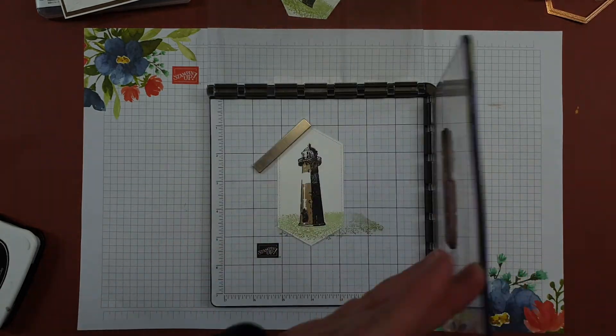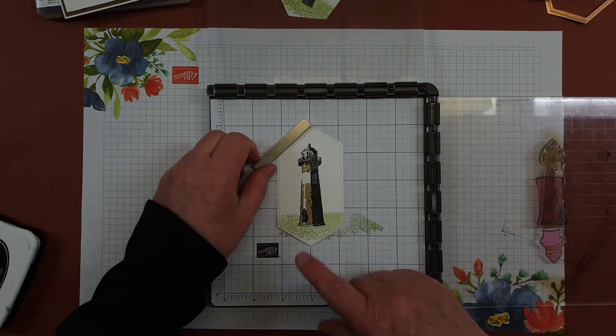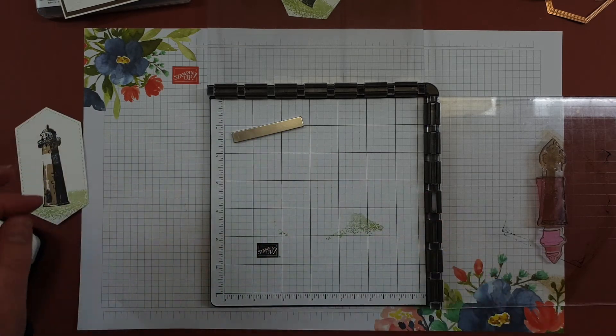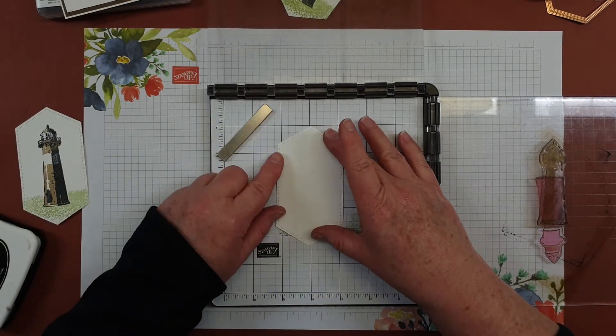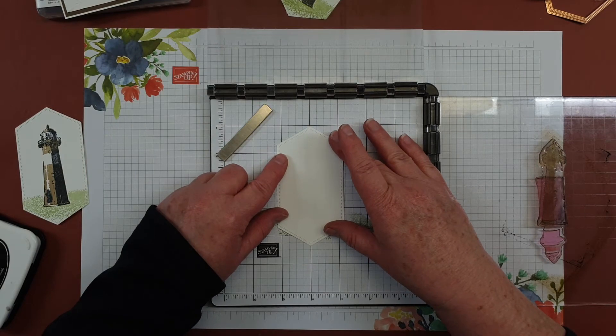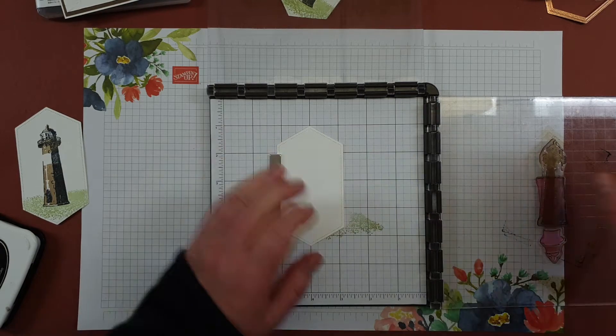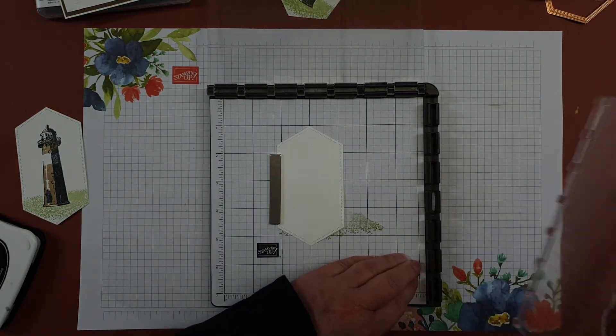So that is two-step stamping. Now let me show you how to do a variation of that one. So we start with our piece of white like we did before, place that in place, turn these back around.